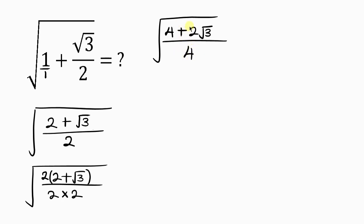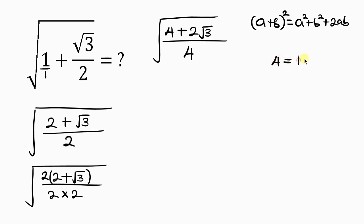Our next step will be to make the numerator a perfect square. I'm going to be writing the numerator in the form of (a + b) squared. You know the expansion of (a + b) squared is equal to a squared plus b squared plus 2ab. So let's go ahead and write the numerator in this form. In order to do that, I'm going to be splitting 4 into 1 plus 3 — since 1 plus 3 is the same as 4. So this becomes the square root of 4, now becomes 1 plus 3, plus 2 root 3.